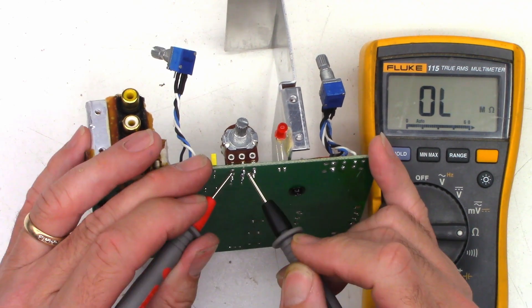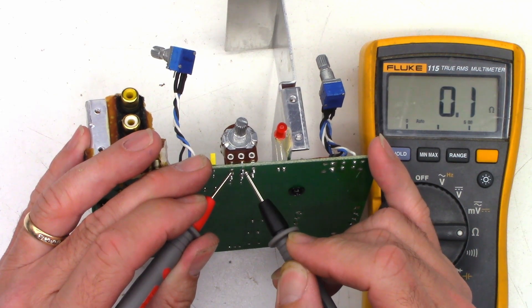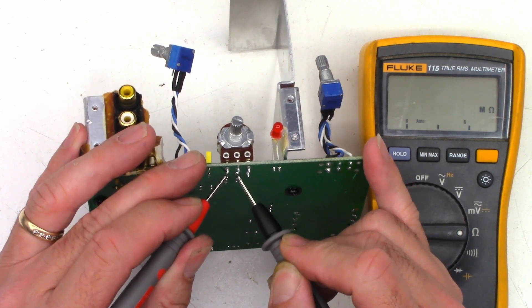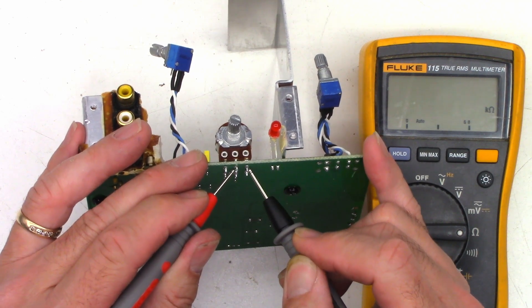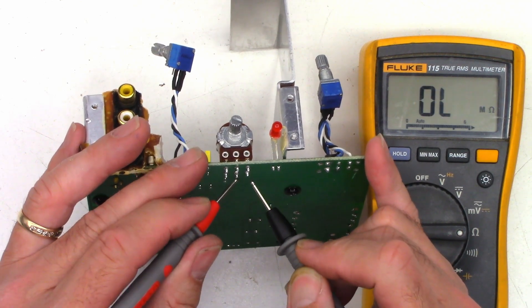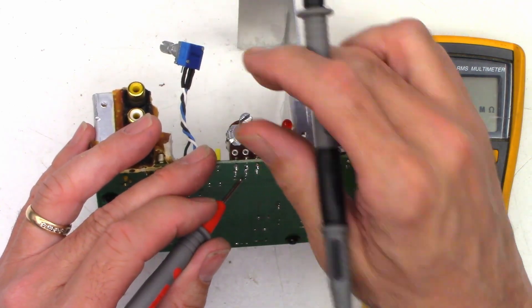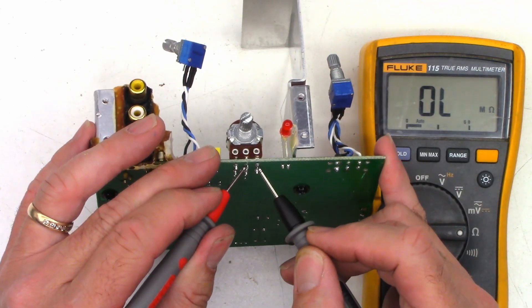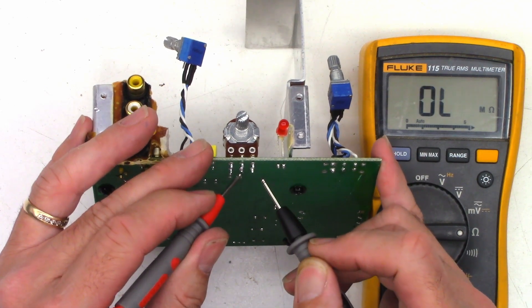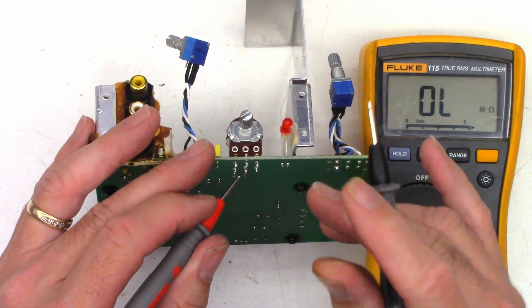Now on to this one, remember these two are shorted together on both sets of pots. So it's at a minimum right now. I should see about 20K and I see 18.41 and 18.97. So let's turn it up all the way. I should see close to zero here. 0.9 ohms, great. And one ohm, perfect.